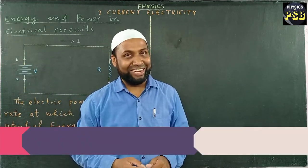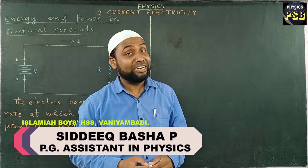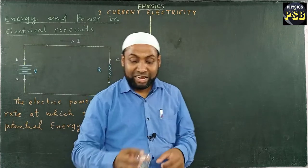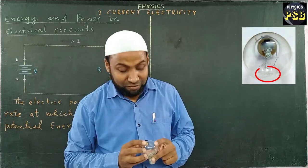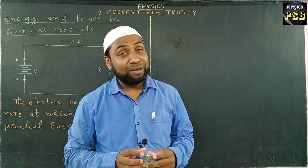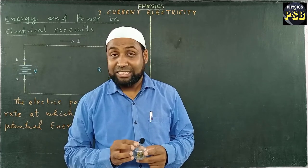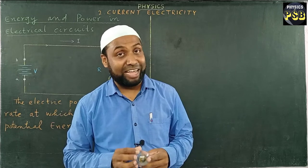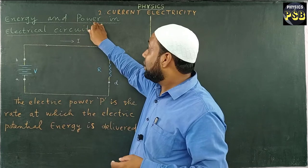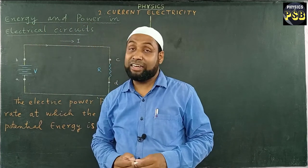Assalamu alaikum, hope you are doing fine. We find the power rating mentioned on electric devices — for example, if we take this bulb, we find 100 watt mentioned here. This represents the amount of electric energy this electric bulb consumes in a given time. In this video, we are going to discuss electric power and electric energy in any electric circuit.